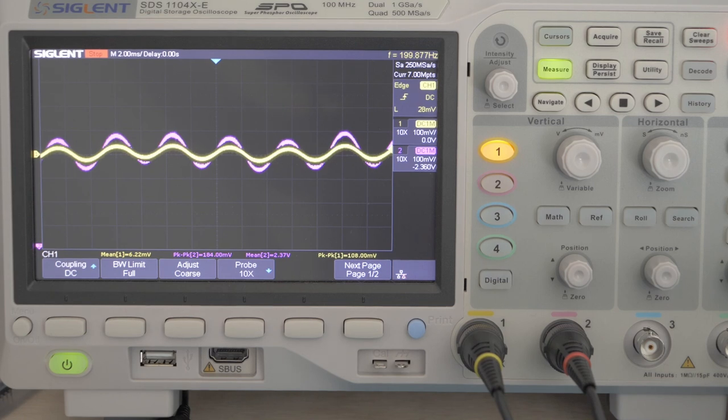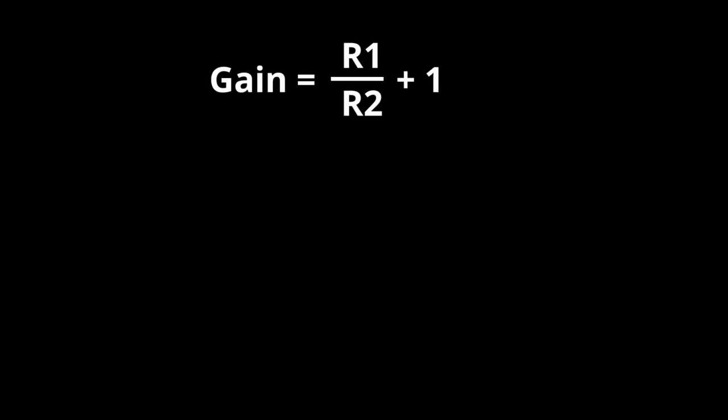That is because I used two 100 kiloohm resistors for R2 and R1. Looking at the formula for gain that we discussed earlier, this means we should be expecting to see a gain of 100k divided by 100k plus 1, which is 2.